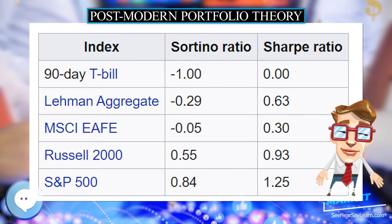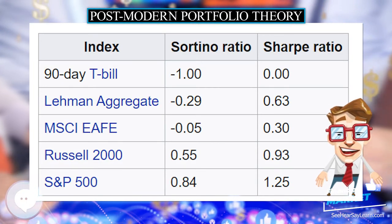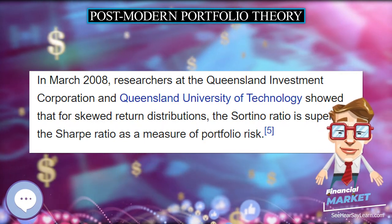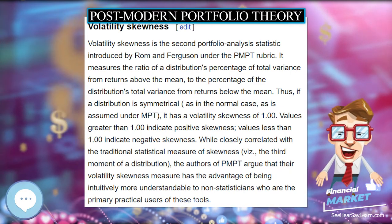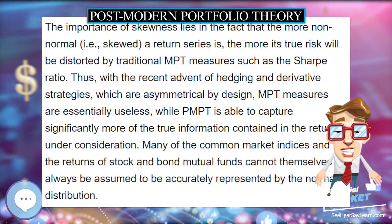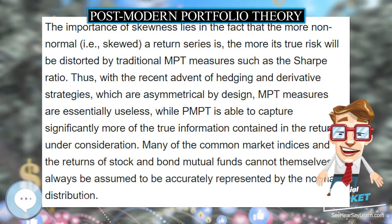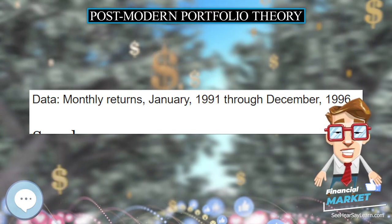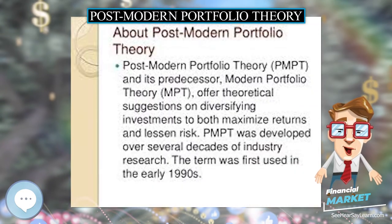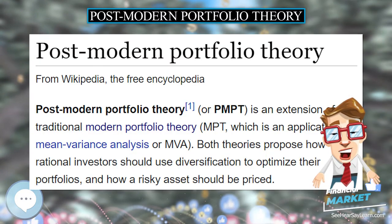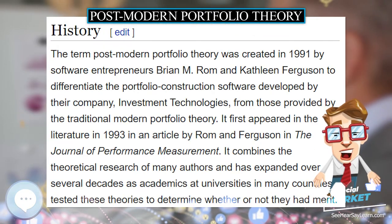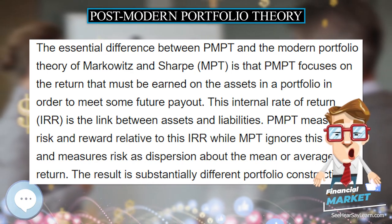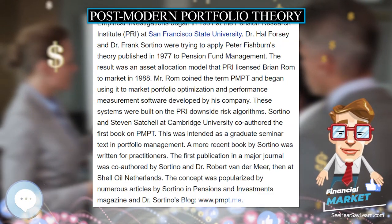For the reasons provided below, this continuous formula is preferred over a simpler discrete version that determines the standard deviation of below-target periodic returns taken from the return series. First, the continuous form permits all subsequent calculations to be made using annual returns, which is the natural way for investors to specify their investment goals. The discrete form requires monthly returns for there to be sufficient data points to make a meaningful calculation, which in turn requires converting the annual target into a monthly target. This significantly affects the amount of risk that is identified. For example, a goal of earning 1% in every month of one year results in a greater risk than the seemingly equivalent goal of earning 12% in one year.